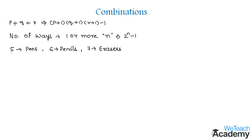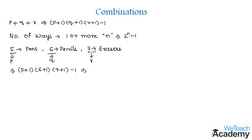If there are 5 alike pens, 6 alike pencils, and 7 alike erasers, we need to find the number of ways of selecting any number of things out of them. We consider p as 5, q as 6, and r as 7. Substituting into the formula: (5+1)(6+1)(7+1) minus 1, which gives 6 into 7 into 8 minus 1, that is 336 minus 1, giving us 335 number of ways.